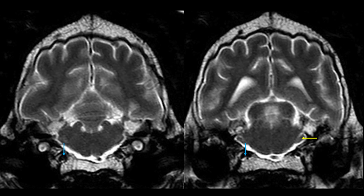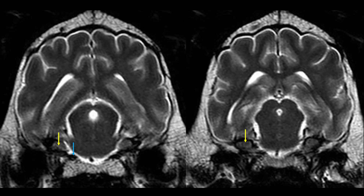Here we can identify the ventral petrosal sinus in the petrobasilar canal, marked with a blue arrow, and the root of the trigeminal nerve, marked with a yellow arrow. As we progress rostrally, we identify the trigeminal ganglion, yellow arrow, in the trigeminal canal, and the ventral petrosal sinus, blue arrow.